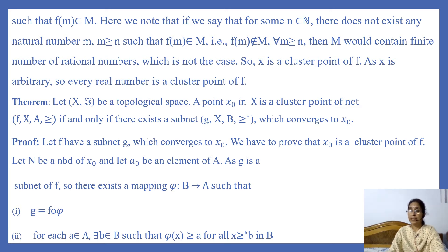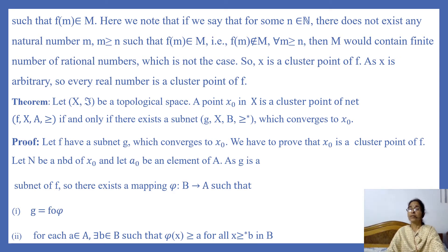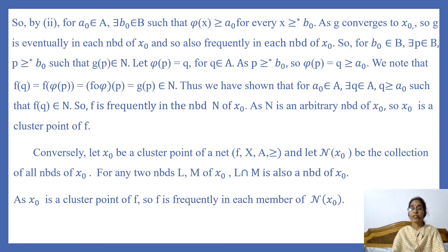As g is a subnet of f, there exists a mapping φ from B to A satisfying two conditions: first, g = f ∘ φ; and second, for each a in A, there exists b in B such that φ(x) ≥ a for all x ≥* b in B. By condition 2, for a₀ in A, there exists b₀ in B such that φ(x) ≥ a₀ for every x in B with x ≥* b₀.